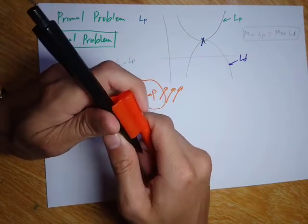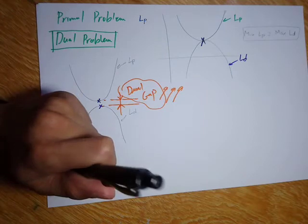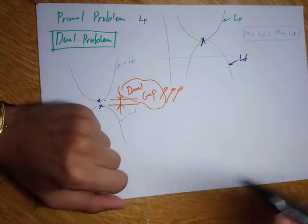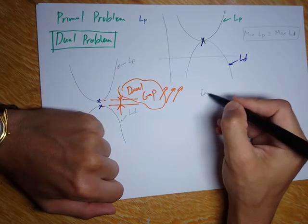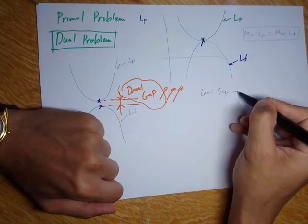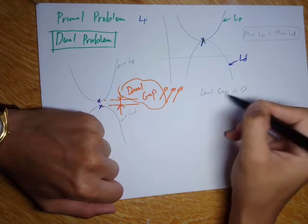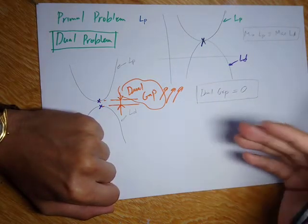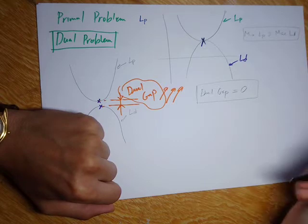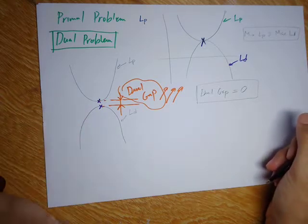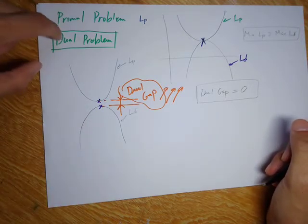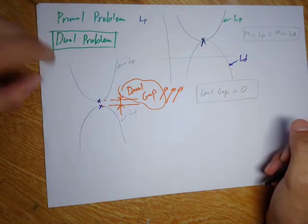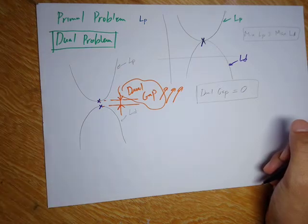In our case, for the minimization problem in the SVM, we can prove that the dual gap is equal to zero. Therefore, for the optimization problem in our Support Vector Machine, we will be using the dual problem.